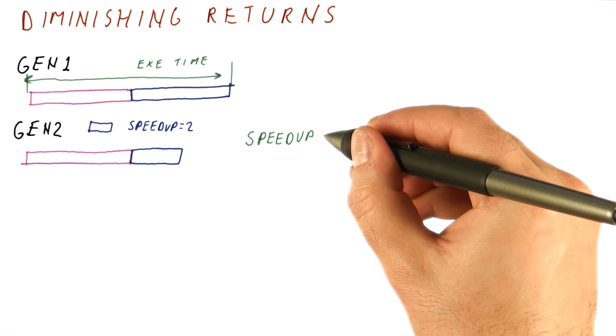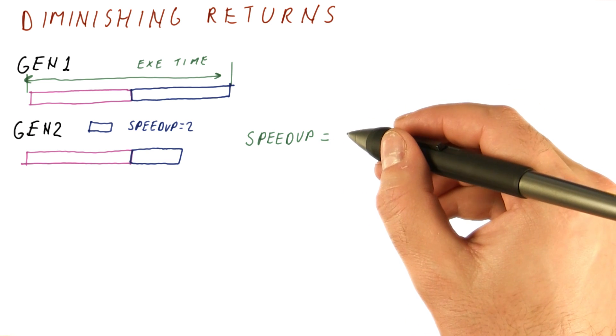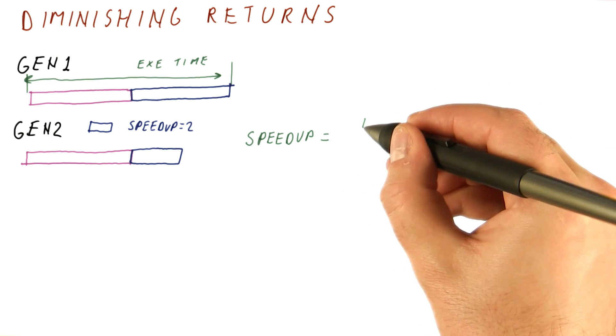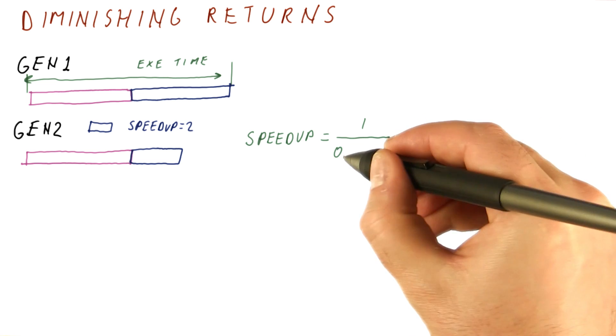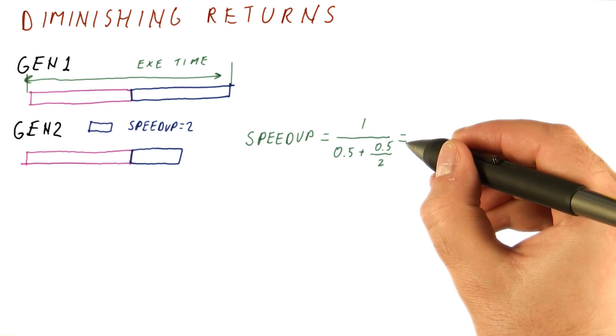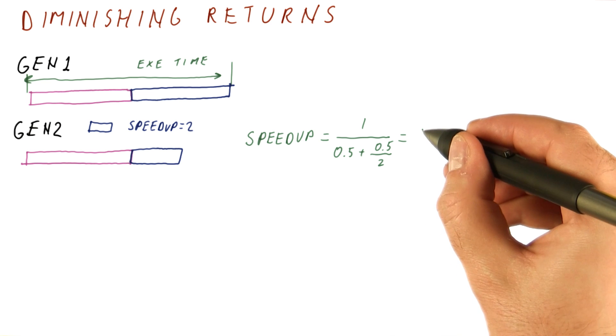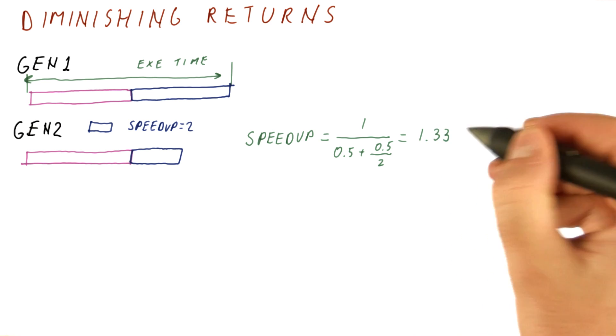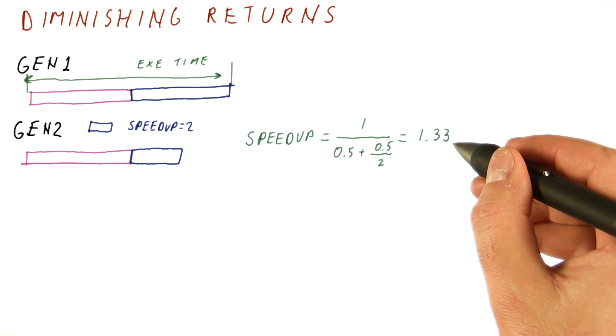The overall speedup of the gen 2 processor over gen 1 is equal to 1 over, half is not enhanced, half is sped up by a factor of 2, and we get the speedup of 1.33, which is a sizable speedup.